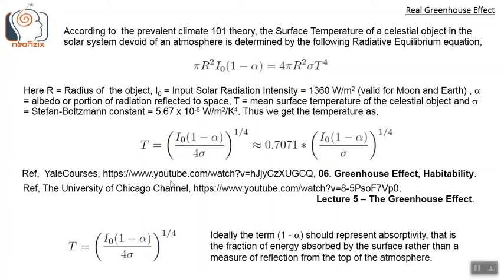You can find this in any textbook or standard lecture — for example, the Yale courses YouTube channel or the University of Chicago YouTube channel, in lectures on the greenhouse effect. Ideally, the term 1 minus alpha in this radiative equilibrium equation should represent absorptivity — that is, the fraction of energy absorbed by the surface — rather than a measure of reflection from the top of the atmosphere, because whatever radiation is absorbed by the surface is what drives its temperature.